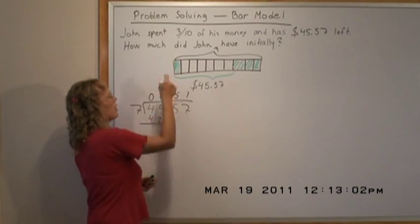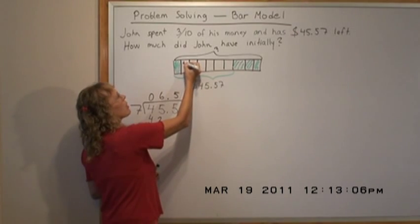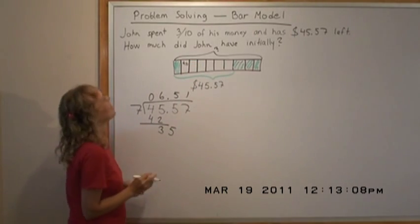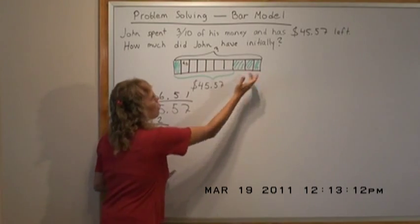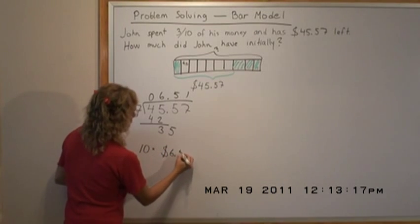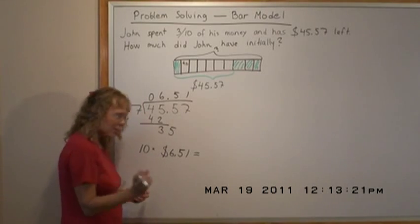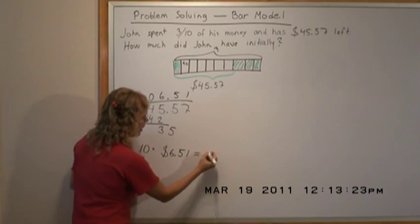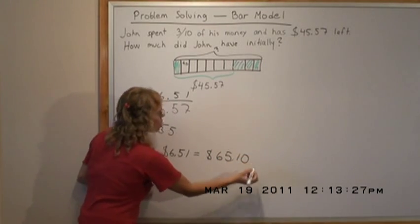So therefore, one part here is $6.51. Now to find the whole thing, it's ten times that amount—ten times $6.51. Multiplying by ten is easy: you move the decimal point right, so we get $65.10. That's how much John had initially.